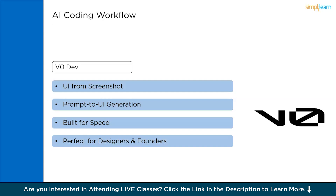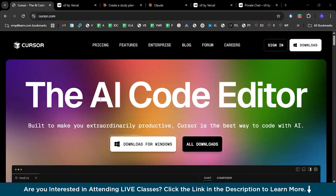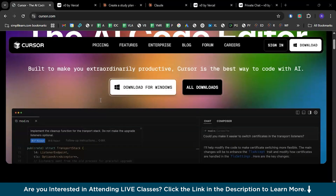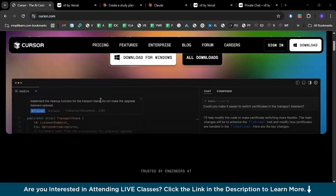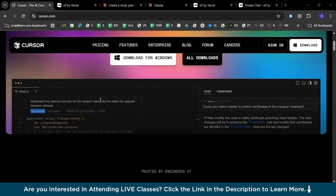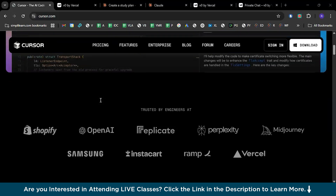Now that we have a detailed understanding of these three tools and how AI assists in the coding workflow, let's dive into the practical demonstration. First, we have Cursor AI — the code editor built on top of Visual Studio Code by Microsoft. You can see the interface completely matches Visual Studio Code with minor enhancements.